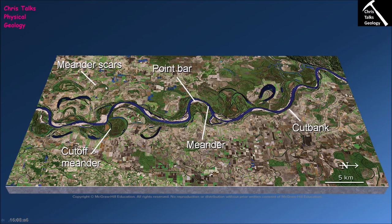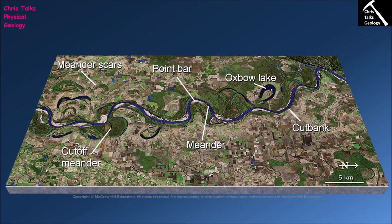Going back to the cut-off meander: over time water continues moving mostly through the main channel, so the cut-off meander becomes a relatively low-energy environment. Sediment builds up at both ends of the meander, eventually completely separating it from the main channel to form an oxbow lake. That oxbow lake then steadily fills with sediment until all that remains is a meander scar — a faint trace on the land surface showing where the meander once was.